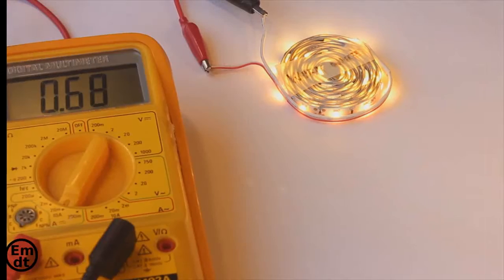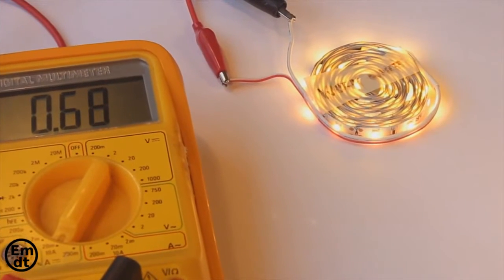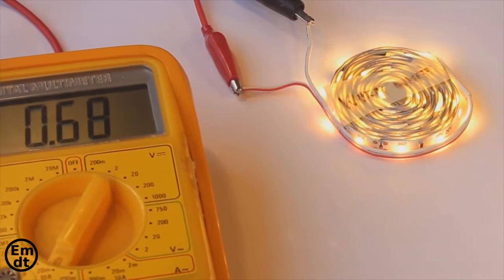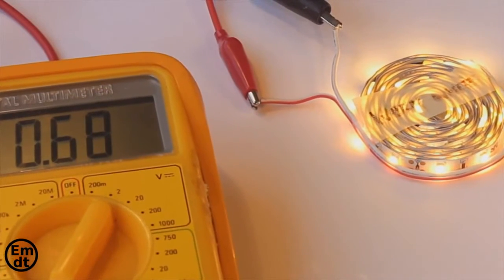And now you see a longer strip. Therefore, this LED strip needs 0.68A of intensity to light it properly.